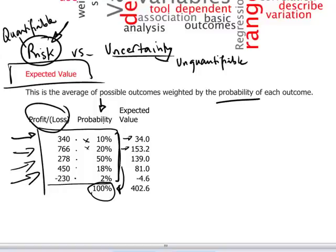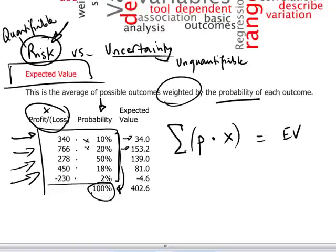For the mathematicians among our candidates, we could write this out as being the outcome x times the probability associated with each outcome. And adding these all together, this is the sigma notation, in order to derive an expected value. We can see here, for example, that these different outcomes weighted by the probabilities gives us an overall expected value equal to just over 402.